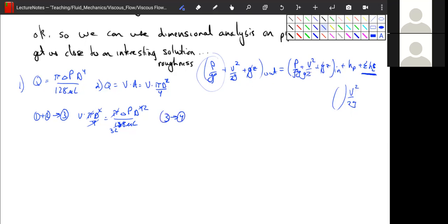So we're going to take 3 into 4, and we're going to get delta p by itself on one side. So we have delta p is equal to 32 v divided by d squared times mu times l.